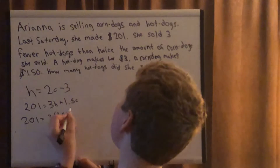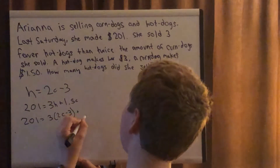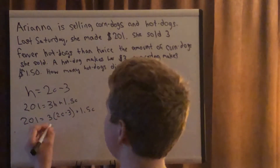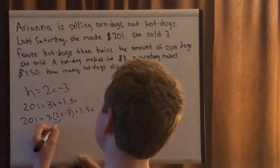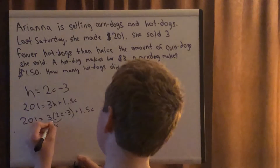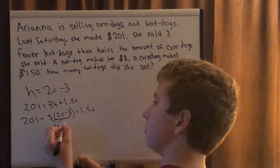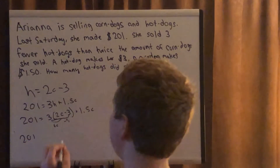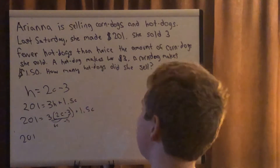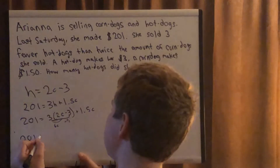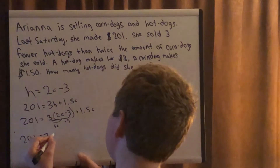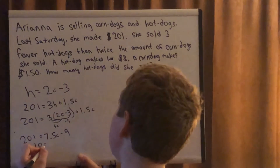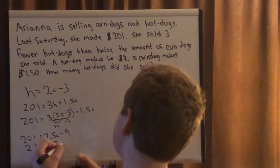Multiplying through: 3 times 2c gives 6c, and 3 times negative 3 gives negative 9. So we have 201 equals 6c minus 9 plus 1.5c. Combining like terms, 6c plus 1.5c is 7.5c, giving us 201 equals 7.5c minus 9. Bringing the 9 to the other side: 210 equals 7.5c.